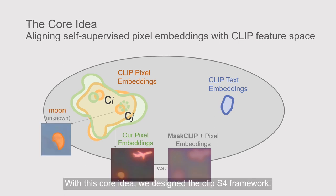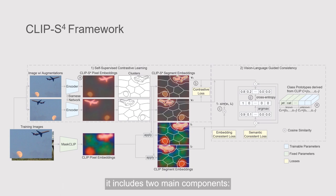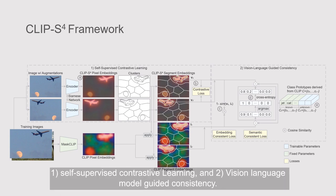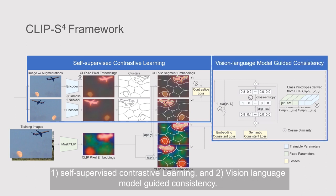In this way, our embeddings are very consistent with CLIP pixel embeddings, which improves embedding quality and enables recognition of unknown classes. With this core idea, we designed the CLIP-S4 framework, which includes two main components: self-supervised contrastive learning, and vision-language model-guided consistency.